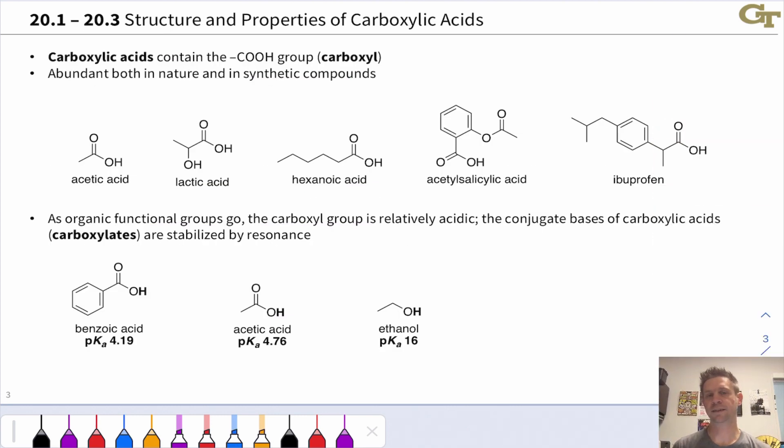Carboxylic acids contain the COOH or carboxyl functional group, which is a carbonyl group linked to a hydroxyl group. This slide shows you some examples of important carboxylic acids. Acetic acid, one of the most ubiquitous organic acids out there, is one.